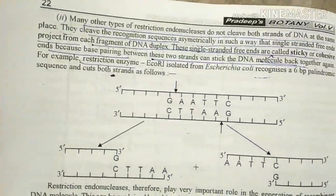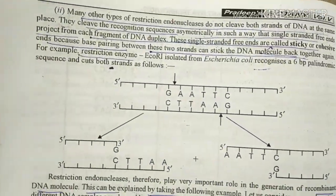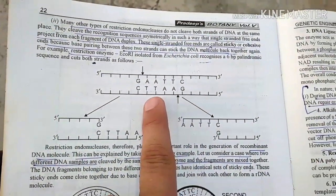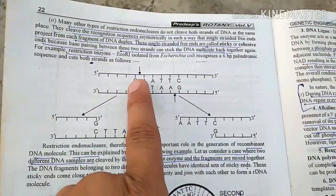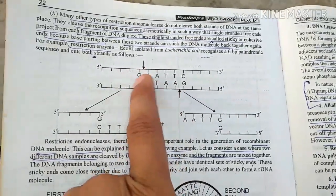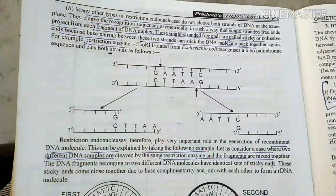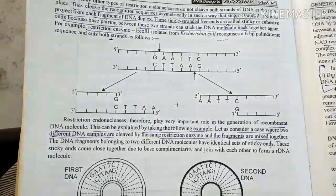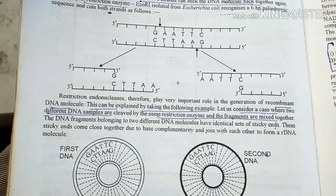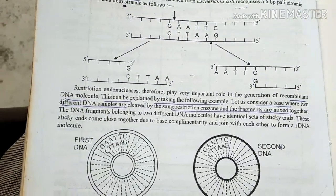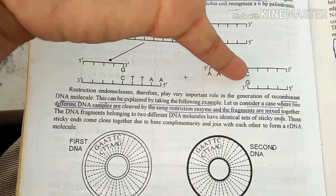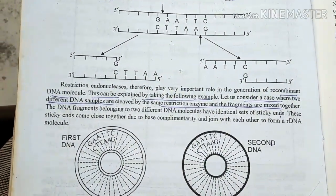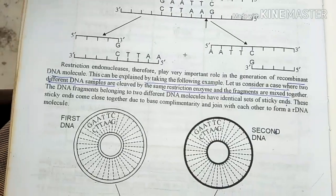There are many other types of endonucleases that give us a sticky end. They make an asymmetrical cut. So with a sticky end the base pairing is reduced, but the binding is good. Where we have to bind a gene, sticky ends are preferable. Restriction endonucleases play a very important role, as shown in the following example.